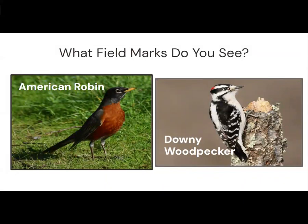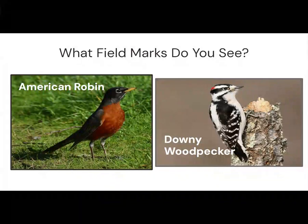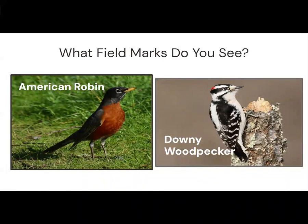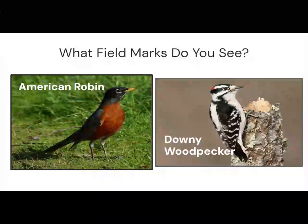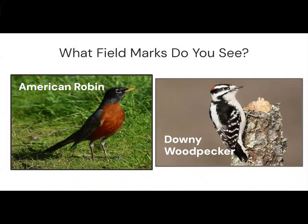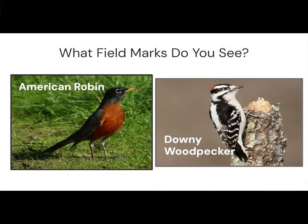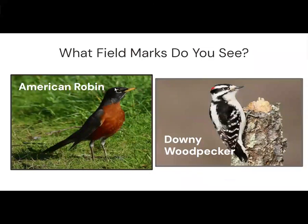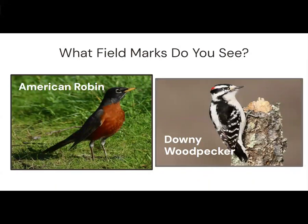Fun fact about the red patch on the head of this downy woodpecker: that indicates it's a male. The female looks the same but lacks that red patch. Someone's also pointing out the white eye ring — the robin has a partial or broken white eye ring, which is a ring of color around the eye. It's super prominent on some birds, broken on others, and some birds don't have them at all. And a black back on the robin — absolutely. Those are all great field marks.